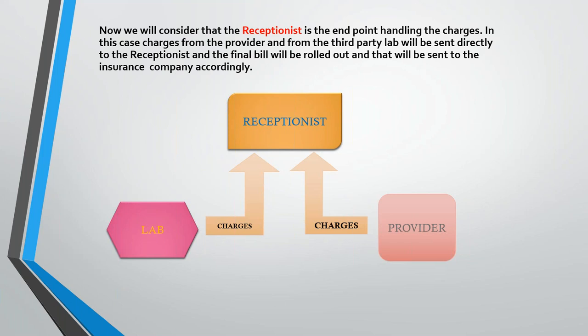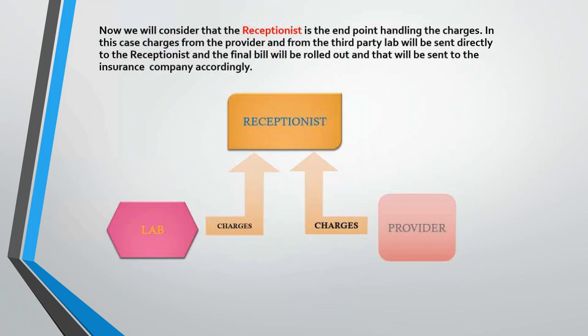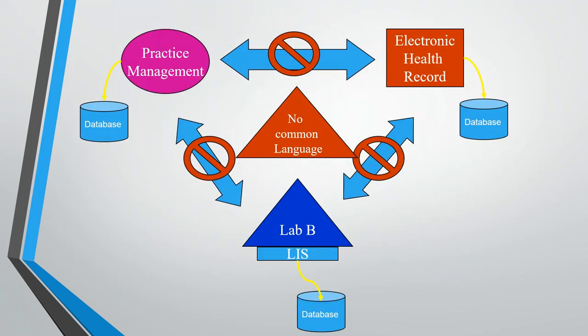Information exchanged between the hospital and the insurance company is done in a different healthcare messaging standard called X12, which is not the HL7 version 2 we are going to look at. X12 is another messaging standard altogether. We'll be referring back to this workflow frequently as we go through HL7 training, to understand what problems existed and how HL7 has resolved them.